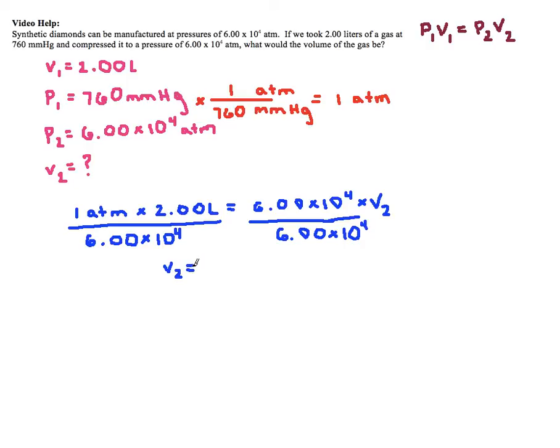This has 2 sig figs, this is 3 sig figs, this is 3 sig figs, therefore I should have 3 sig figs, so it's going to be 3.33 times 10 to the negative 5th.